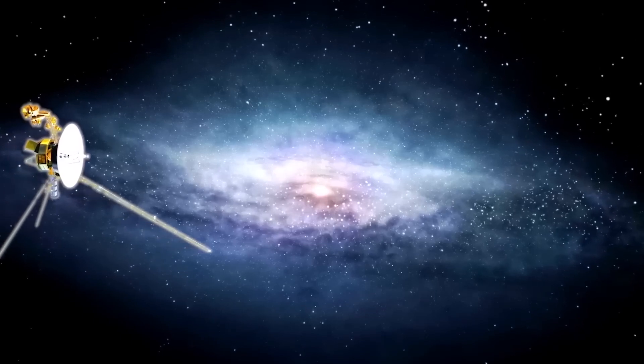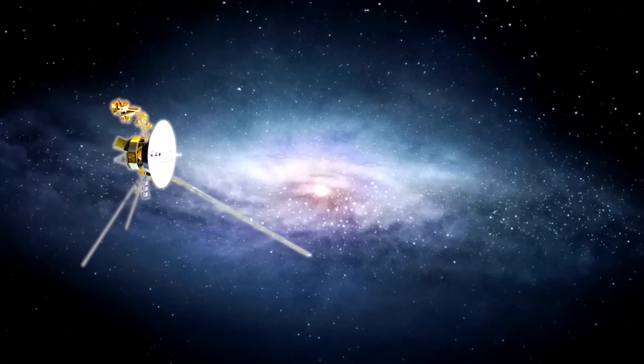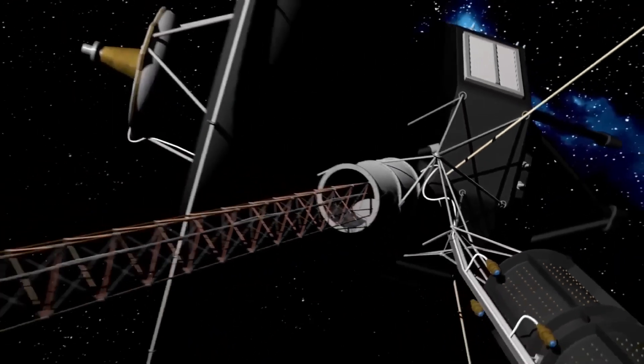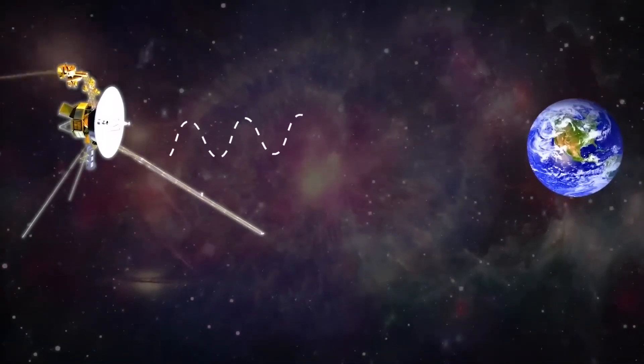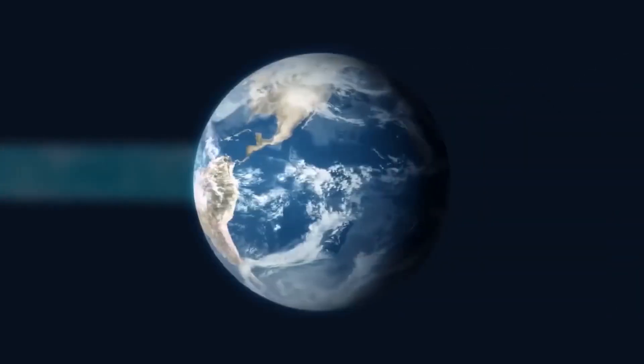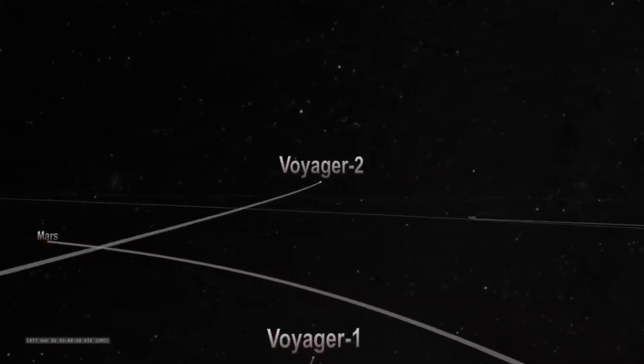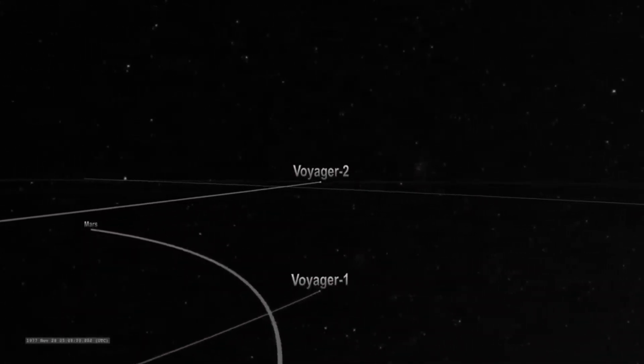As in the case of Voyager 1, the probe observed a decrease in the solar wind and an increase in cosmic rays coming from outside the solar system. However, the magnetic field did not change in direction, confirming that the result observed six years earlier was no exception. The relatively close distance suggests that the heliopause is stronger than previously thought. Both Voyager 1 and 2 probes are still moving away from the heliosphere, the exact shape of which is still unclear.